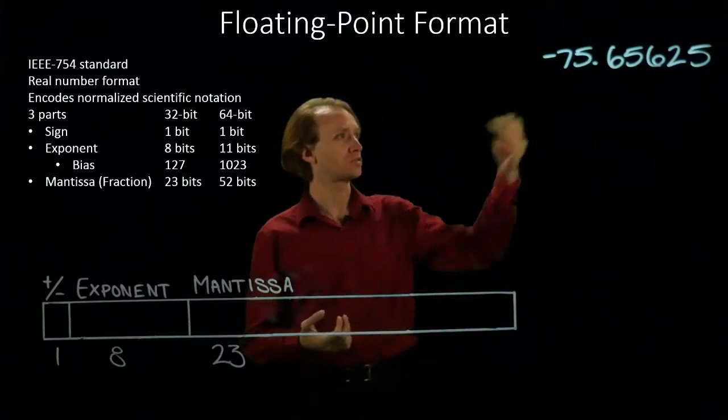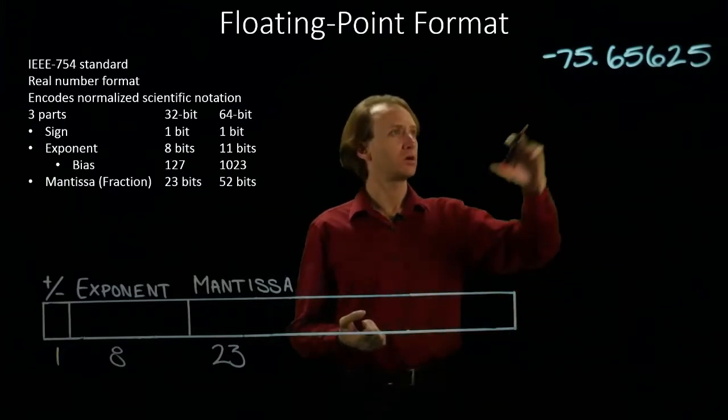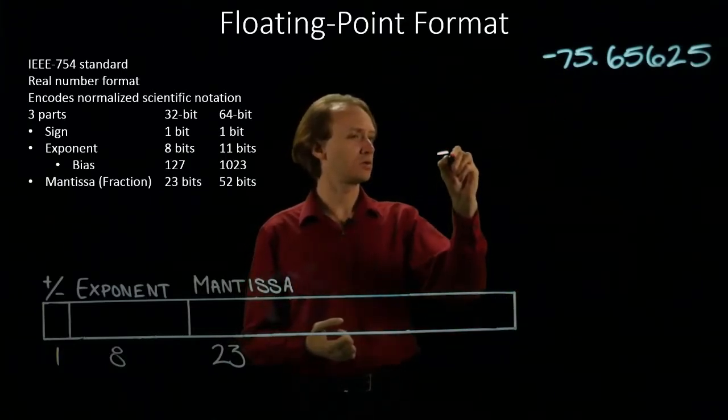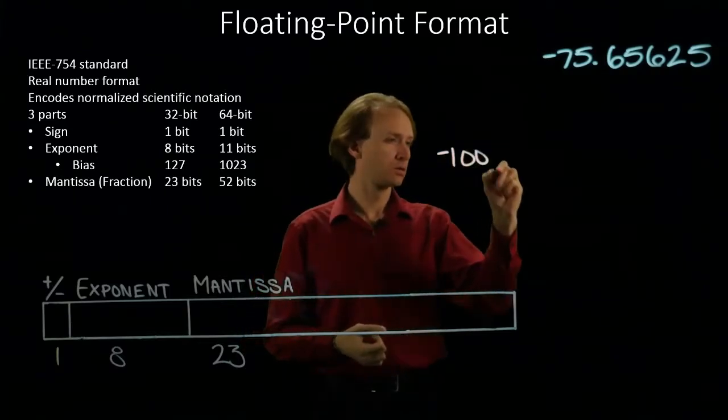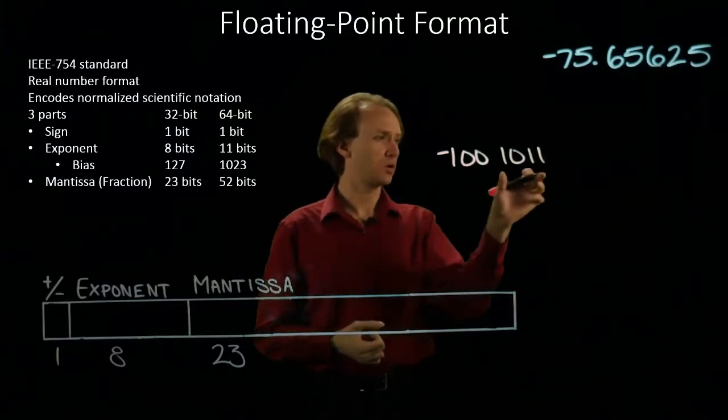As usual, our first step is to convert this from decimal to binary. Starting with the whole number part, I have a negative number, got 64 plus 11. So there's my 64 and there's 11.